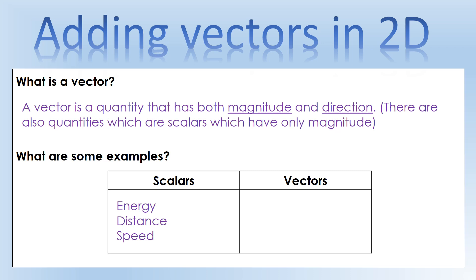Vectors have both size and direction. For example, a force of 20 newtons to the right, an acceleration of 9.81 meters per second squared downwards, or a velocity of 20 meters per second upwards and to the left. So vectors have a direction that comes with them.